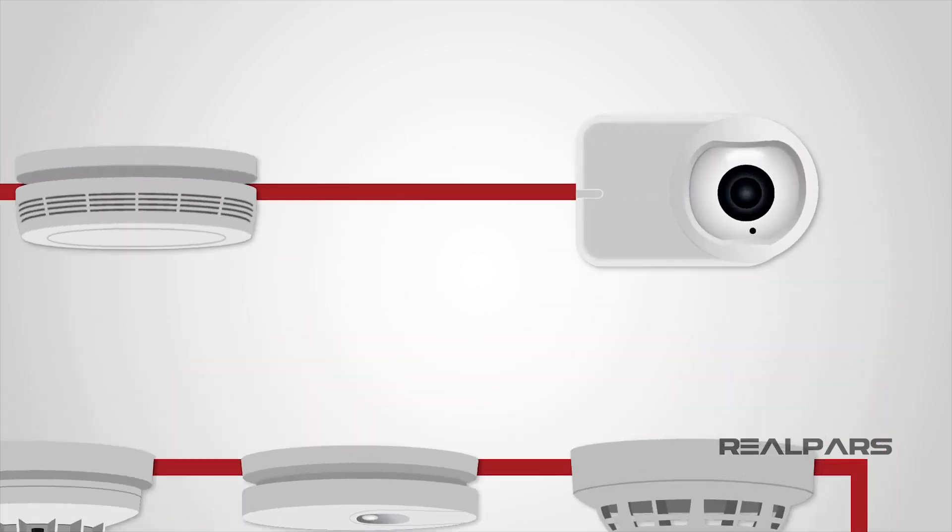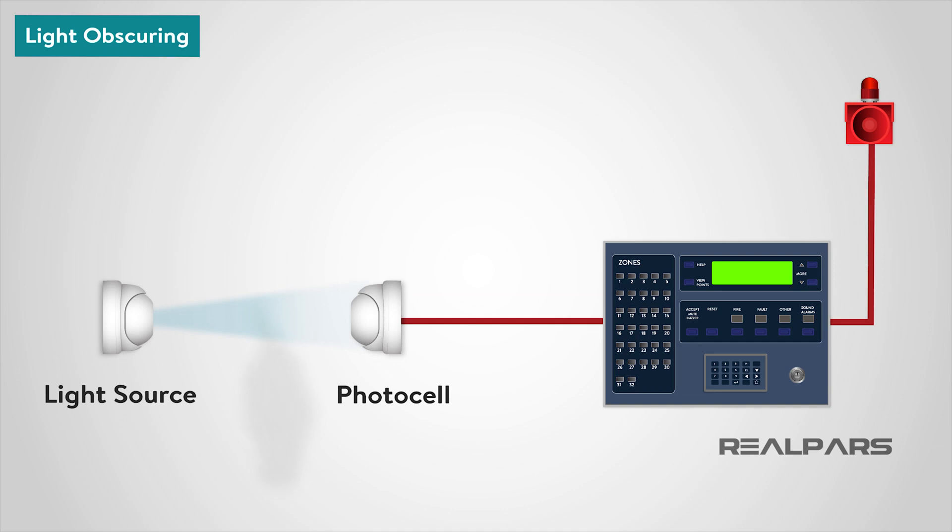In the light obscuring smoke detector, smoke interferes with a light beam between a light source and photocell. The photocell measures the amount of light it receives. The variation in photocell output is being used to initiate an alarm. This type of detection can be used to protect large areas with a light source and photocell positioned some distance apart.